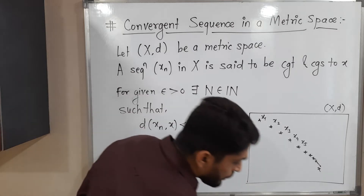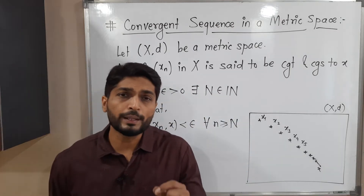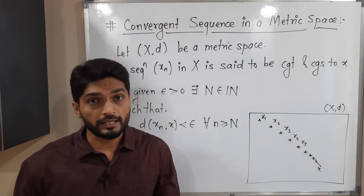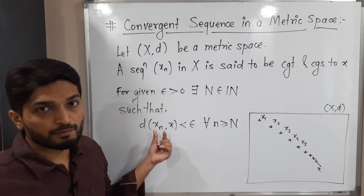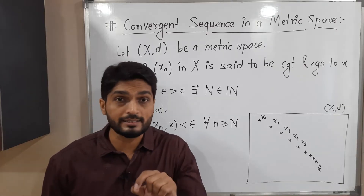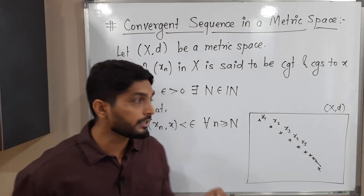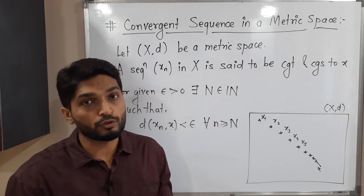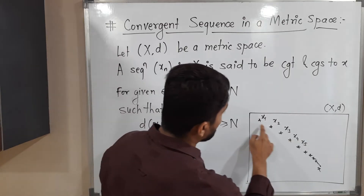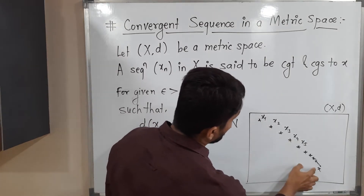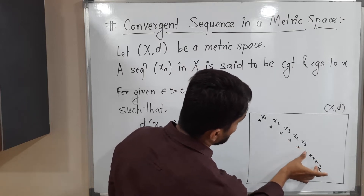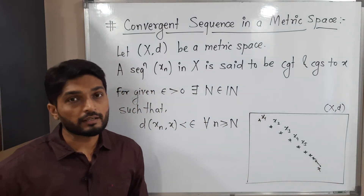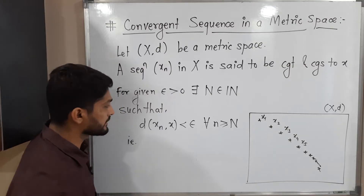The definition says: for any given small positive real number epsilon, you can find a natural number N such that the distance between X_n and X is less than epsilon. That means the distance between the terms of the sequence and the limit point X is reducing — D(X1, X) > D(X2, X) > D(X3, X) and so on. The distance is clearly reducing.